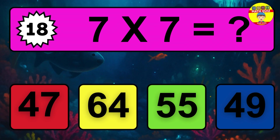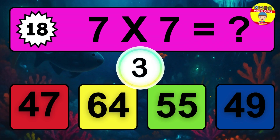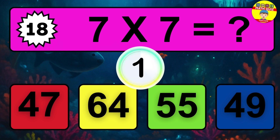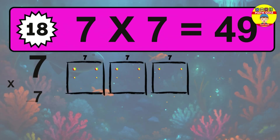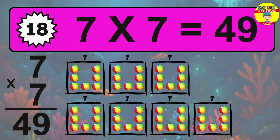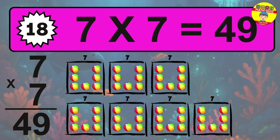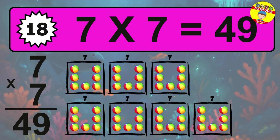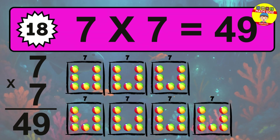Question 18. Seven times seven equals what? The answer is seven times seven is 49. To calculate, we have seven groups with seven balls each one. So how many balls do we have? 49 balls.